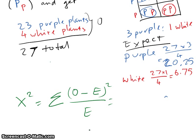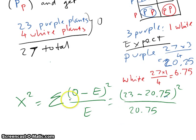So summation means add together. So the observed value here for purple plant is 23 minus the expected value would be 20.75 squared divided by expected value 20.75. And then summation, add together. I mean I have to add the white also. So the white observed is 4 minus the expected value is 6.75 squared divided by 6.75.